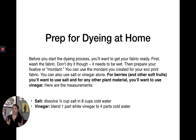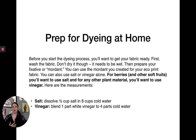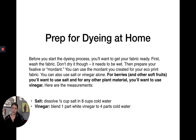Before you start the dyeing process, get your fabric ready. Wash your fabric but leave it damp — we like it wet, it's easier to work with. Then prepare your fixative or mordant. You can use the mordant from your ecoprint fabric with rusty metal, or use salt or vinegar alone. For berries and soft fruits, use salt. For other plant materials like leaves, bark, or flowers, use vinegar. If using salt, dissolve half a cup of salt into eight cups of water. For vinegar, blend one part white vinegar to four parts cold water.